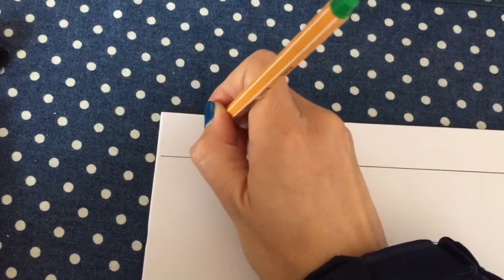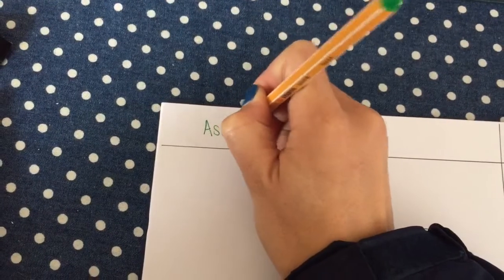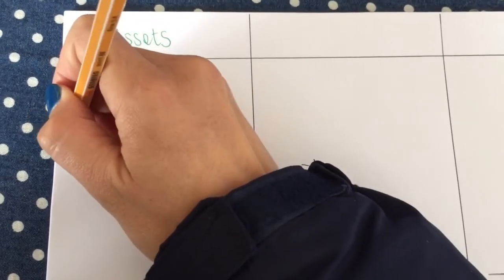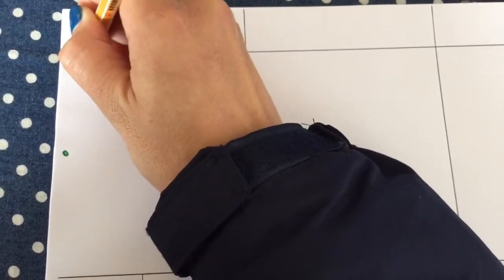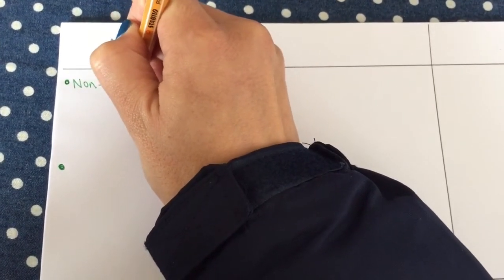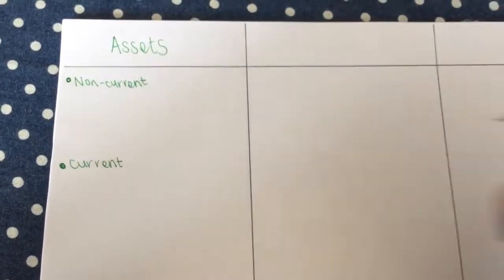I'm going to start and focus on the first heading, which will be my assets. Now you need to know the entire list of assets and how to classify all of them. Under assets, I've got two main headings: non-current assets and current assets.